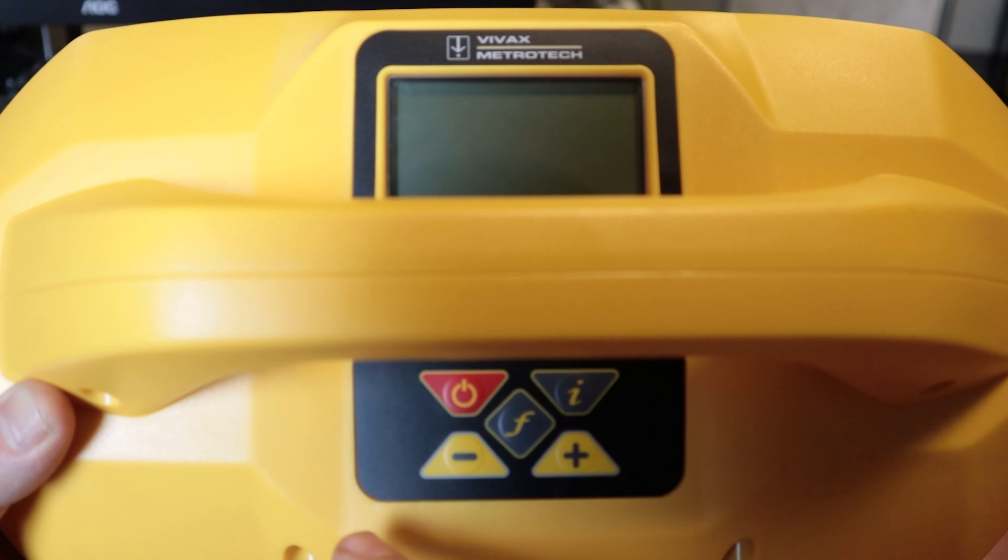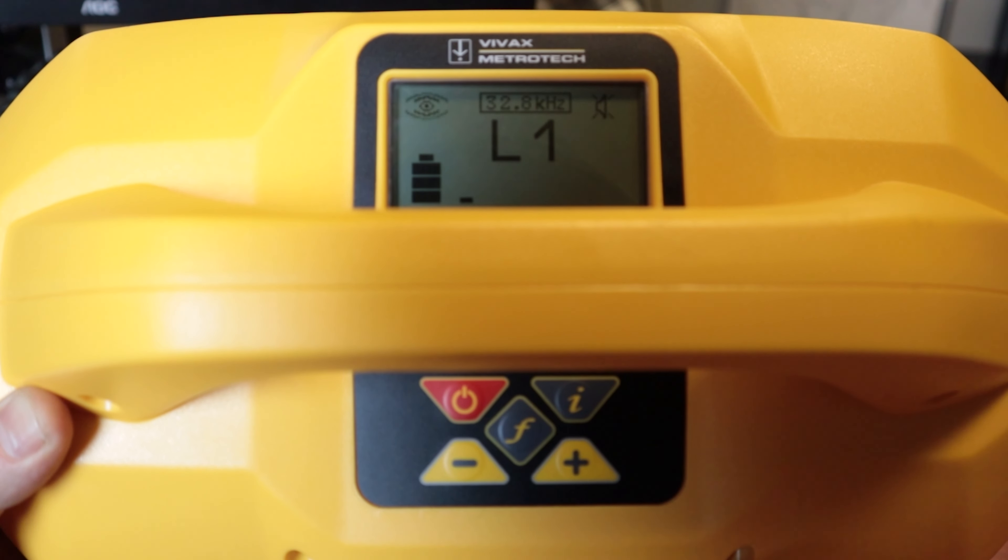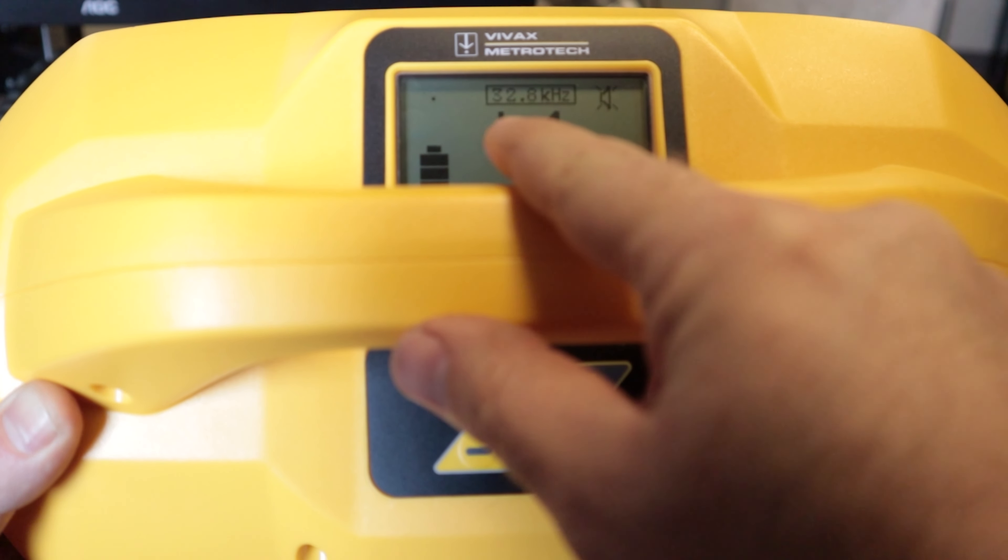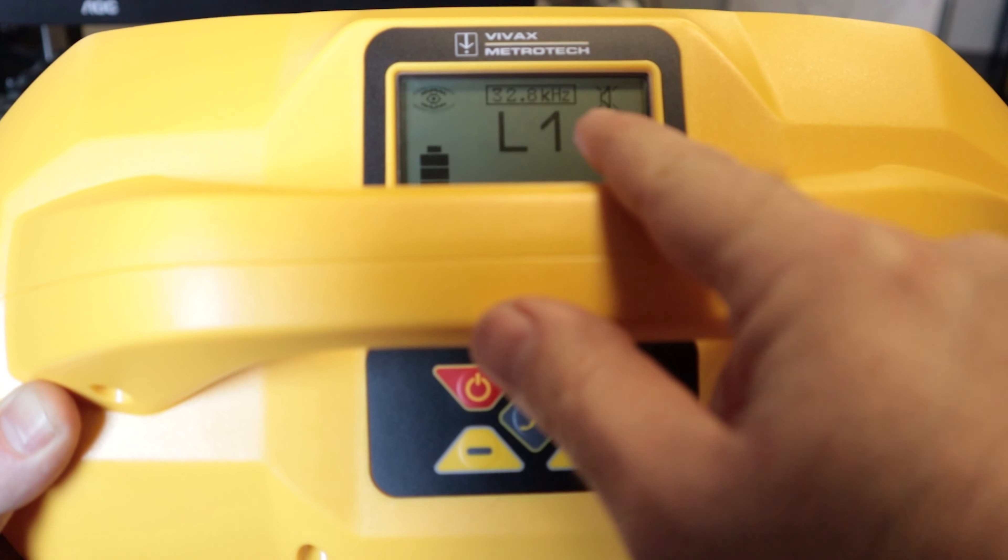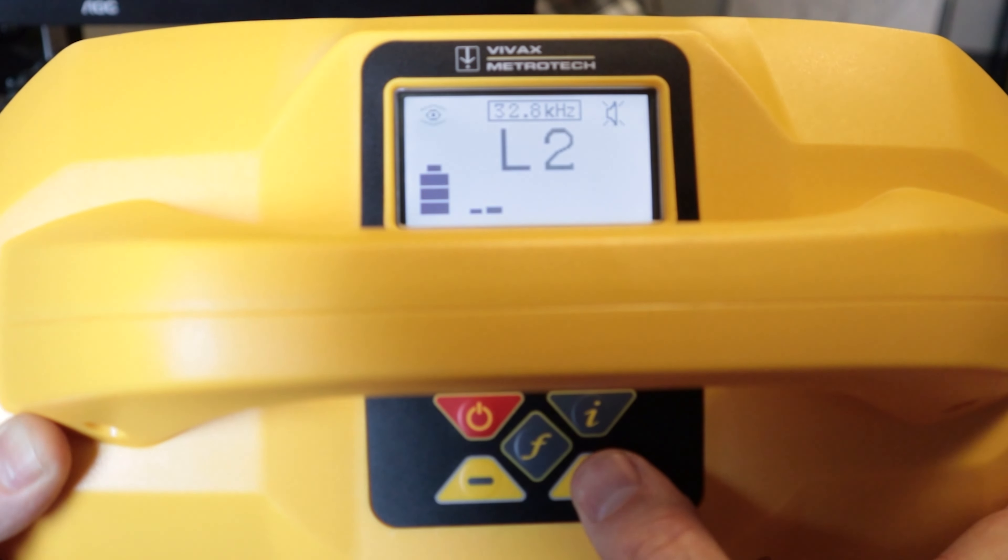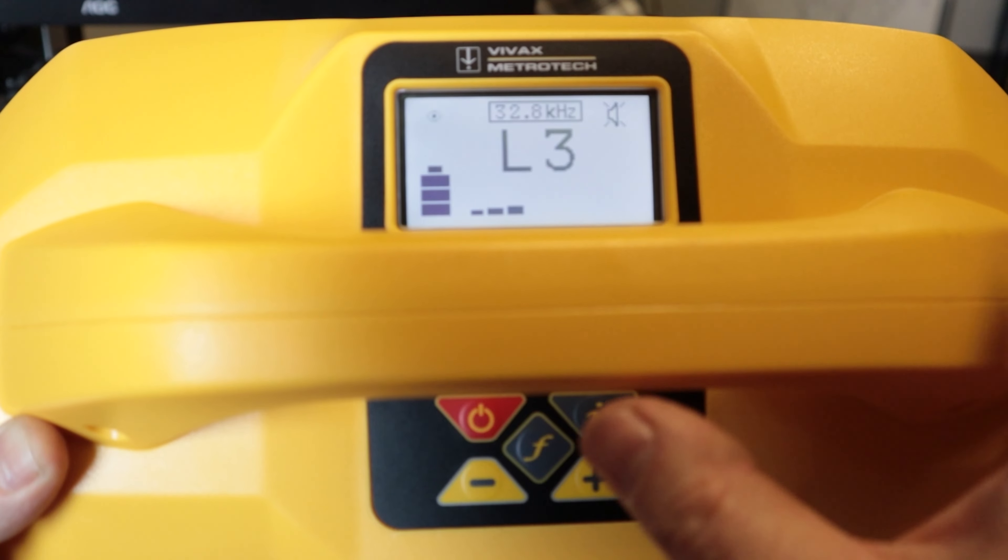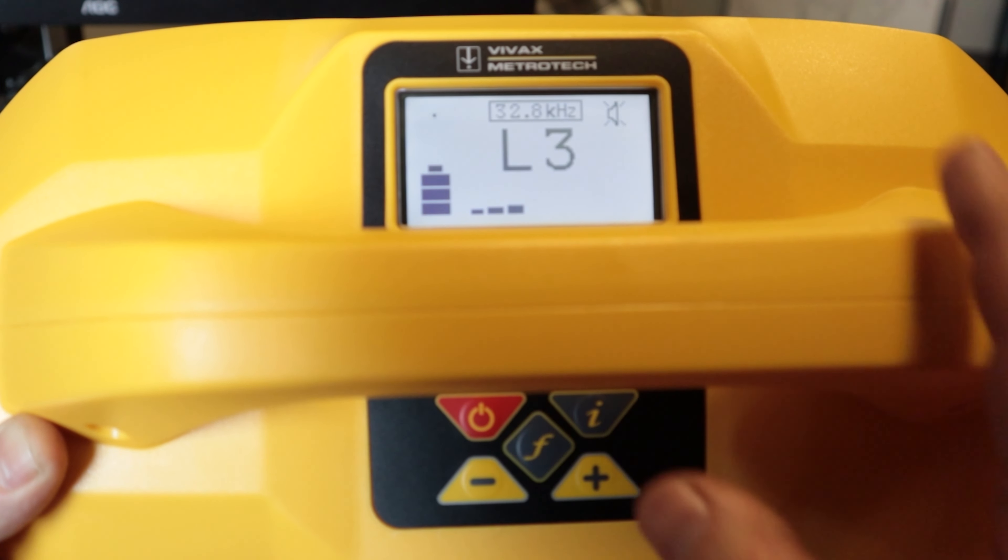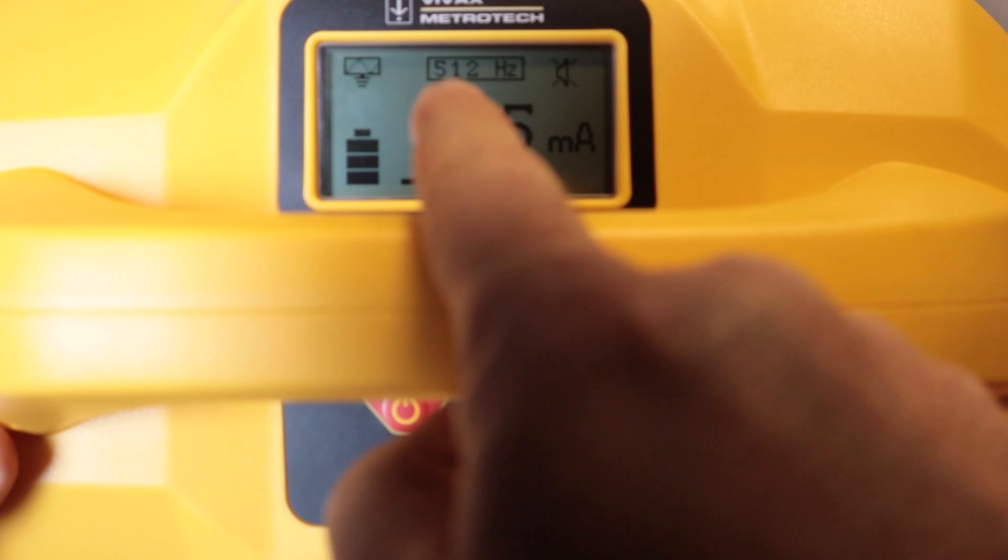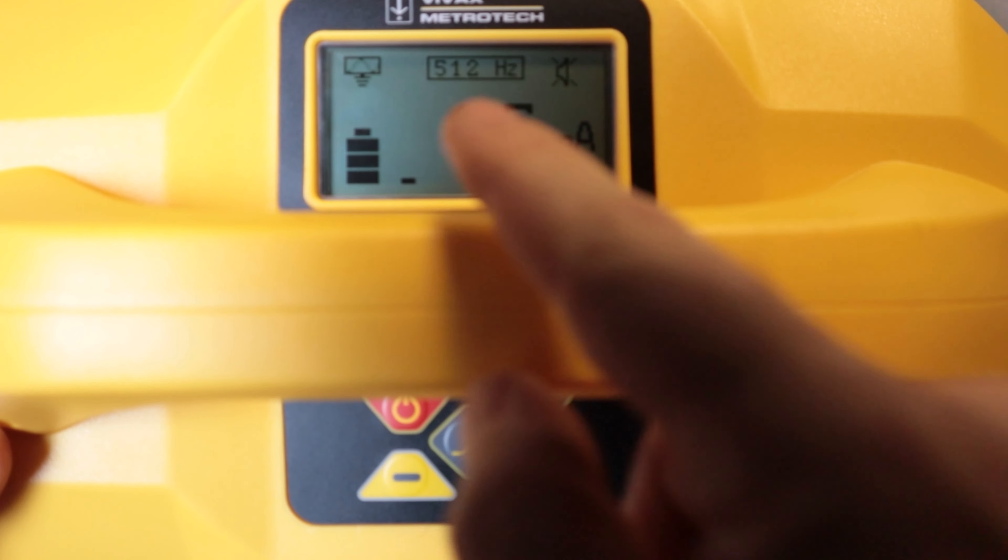Okay now we're going to move on to our transmitter and this is going to apply to either a 5 watt or our 10 watt transmitter. I can see on screen here this icon shows me that I am in induction mode. I am in 32.8 kilohertz, my speaker is turned off and I'm on level 1 and my battery is fully charged. If I push the plus button it will up my level and I can go up to level 3. Now what I'm going to do is plug in my leads and show you what that screen looks like.